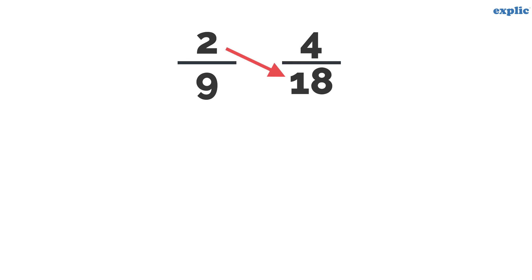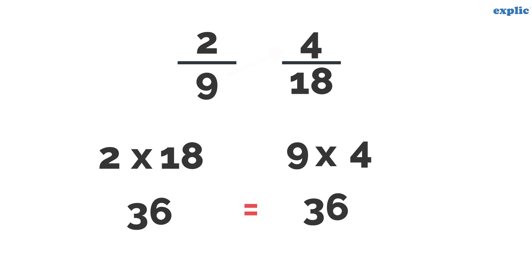Multiply the numerator of the first fraction with the denominator of the second fraction. Similarly, multiply the denominator of the first fraction with the numerator of the second fraction. The cross products are the same. Hence the fractions are equivalent fractions.